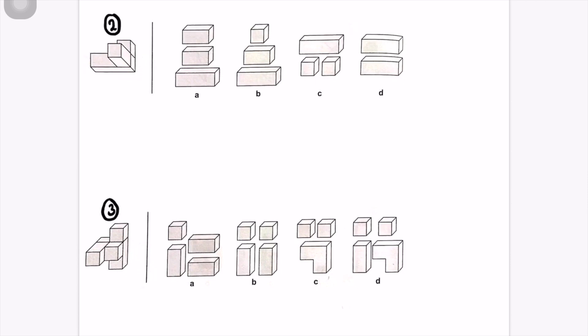Question number two: we can see this shape has a cuboid, a cube, and a much larger cuboid. So we're looking for a choice with a medium-sized cuboid, a cube, and a larger cuboid. That's B. Checking the others: D doesn't have a cube, C doesn't have a medium-sized cuboid, and A doesn't have a cube. So it must be B — the cube is here, the medium cuboid is here, and the large cuboid is down there.